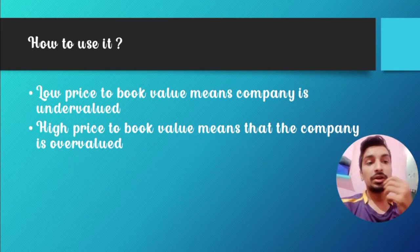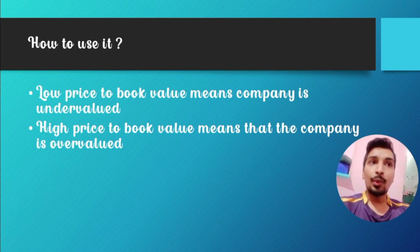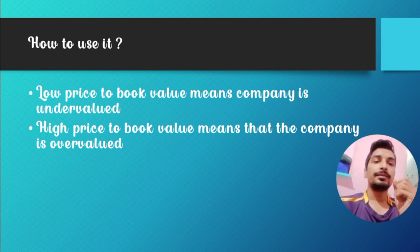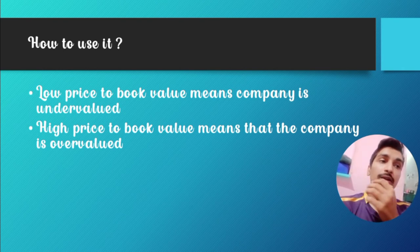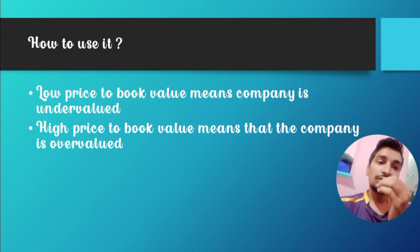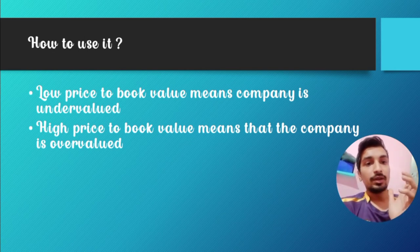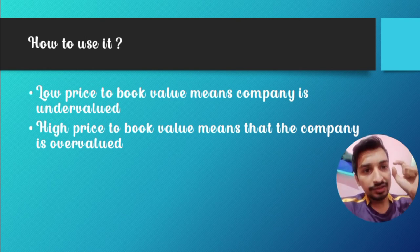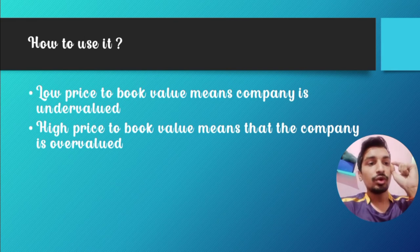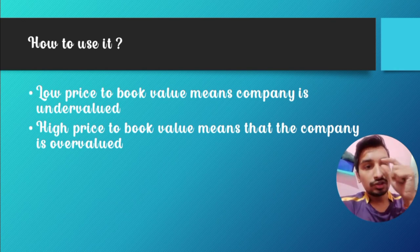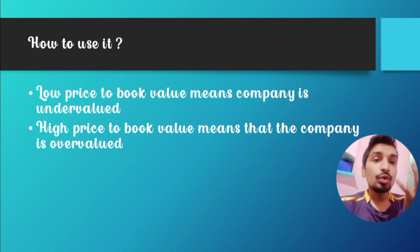A high price-to-book value means the company is overvalued — the share price exceeds the book value. Compare different companies and look at their price-to-book values: if it's low, consider buying; if it's high, avoid it. Combine this with the price-to-earnings ratio and other ratios to build your own investment strategy, prioritizing the parameters most important to you for long-term investing.